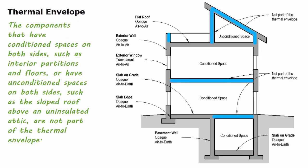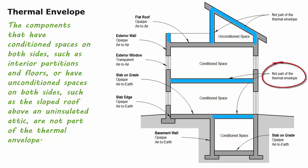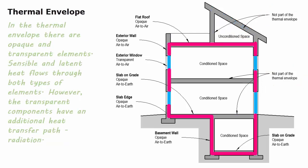The components that have conditioned spaces on both sides, such as interior partitions and floors, or have unconditioned spaces on both sides, such as the sloped roof above an uninsulated attic, are not part of the thermal envelope. In the thermal envelope, there are opaque and transparent elements.